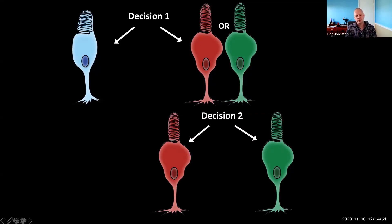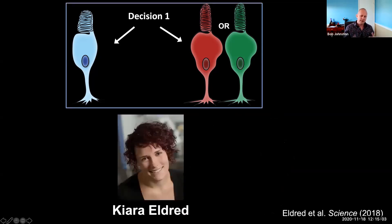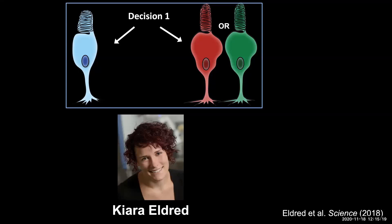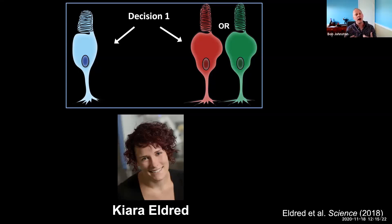Today I'm going to tell you one published story about decision one, and one story that is still in progress but near the end, with a couple experiments we're finishing up on decision two. Decision one we published about two years ago now — really awesome work by a fantastic grad student in the lab, Kiara Eldred, who has gone on to Tom Ray's lab to pursue her postdoctoral work.